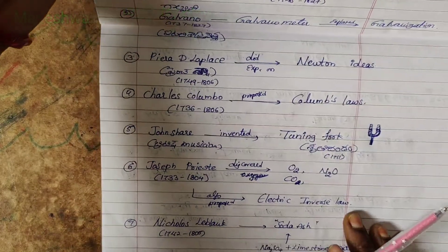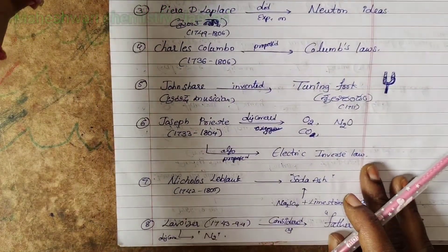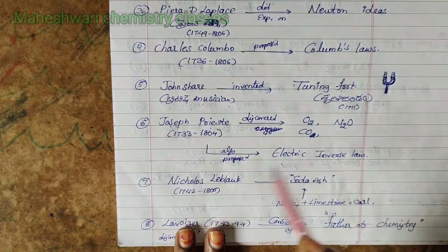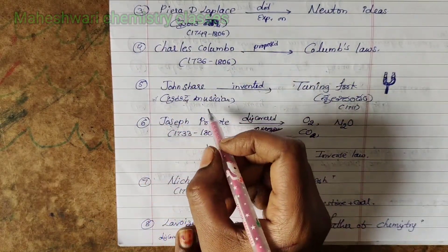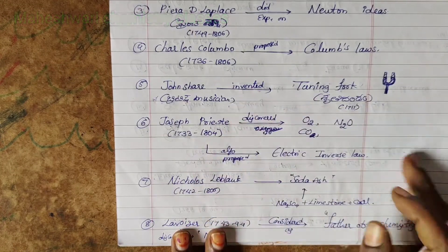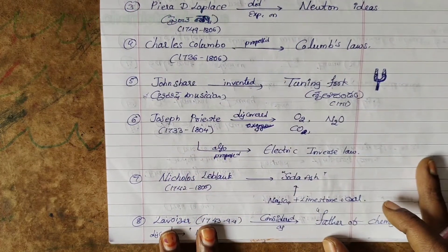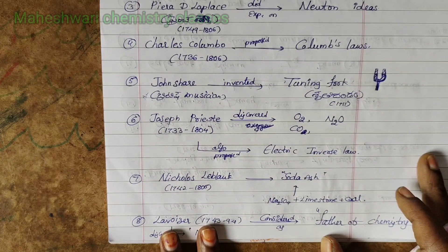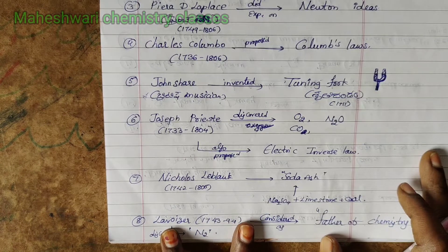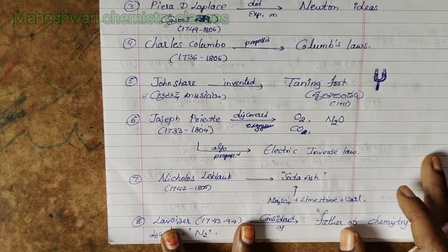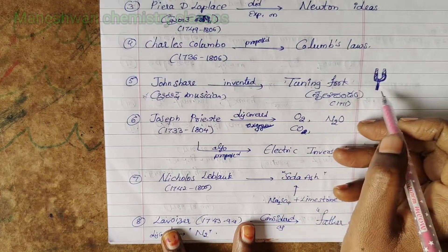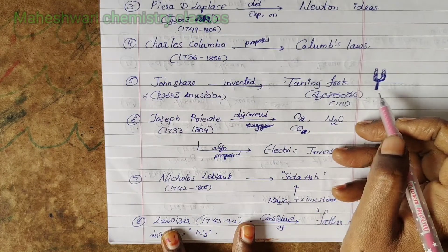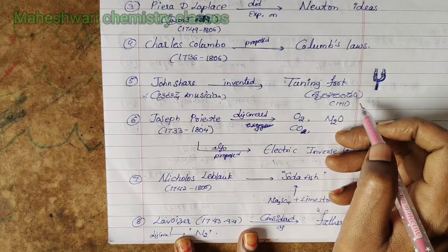John Shore was a British musician — different from the scientists. We should understand scientists as well as musicians. John Shore invented the tuning fork, known in Telugu as Shruti Dandam. This was in the year 1711.